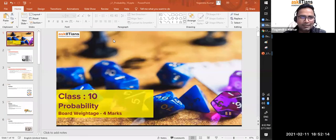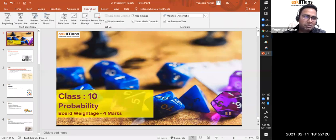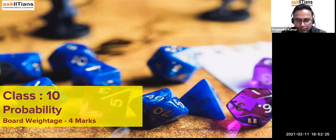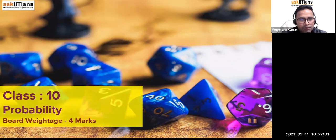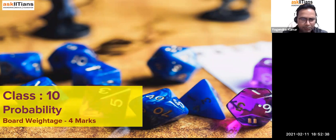My name is Yogend Kumar, I'm a maths teacher. Today we are going to do the probability chapter, which comes in your final exam for almost four marks. It has a weightage of four marks, so this is a really important chapter. You can easily expect one long answer and one short answer question. It's a pretty simple chapter and I hope you can score full marks in the final exam.